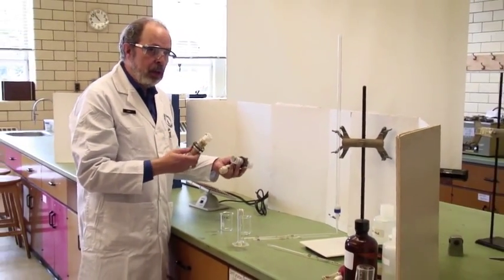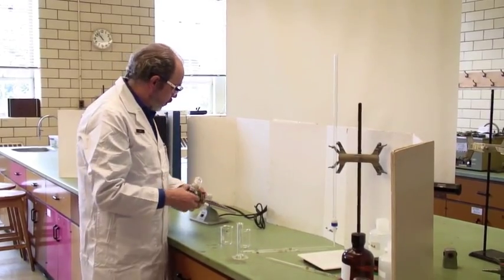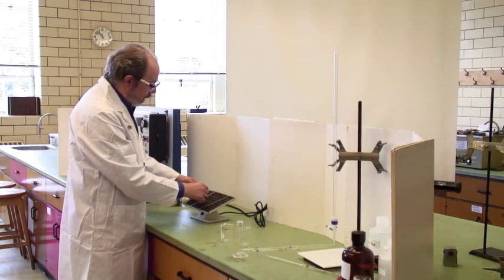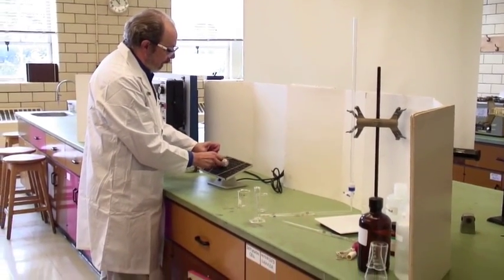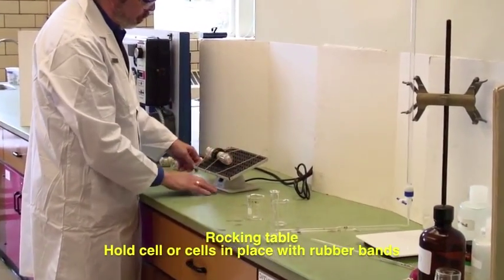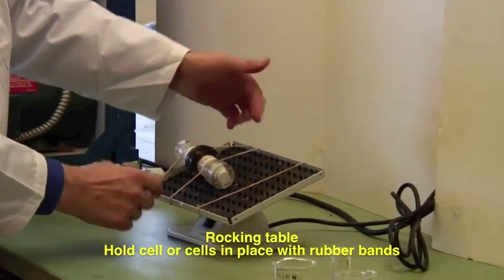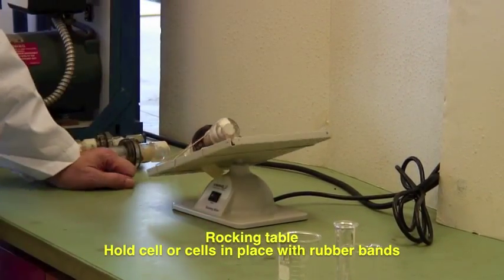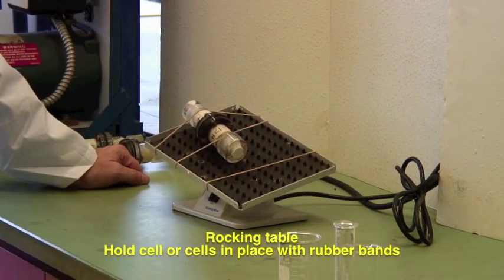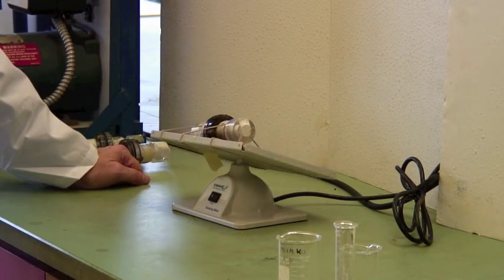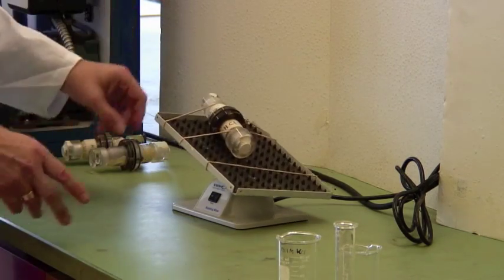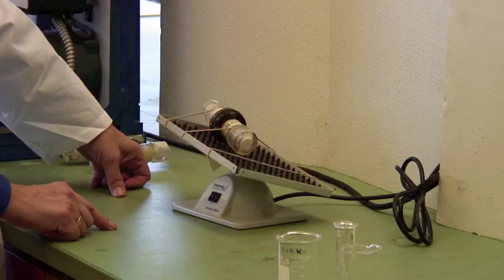And we've got multiple ways for them to be agitated. The first and the easiest one is this little rocking table. It's designed for blood labs. You need to hold it in place just by using the elastics, and push the switch. And that rocking motion is enough to make sure that you've got uniform concentration gradients inside the cells themselves.